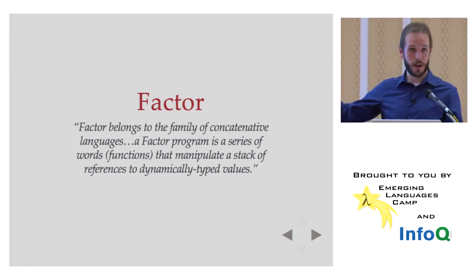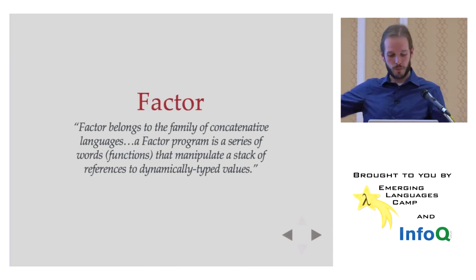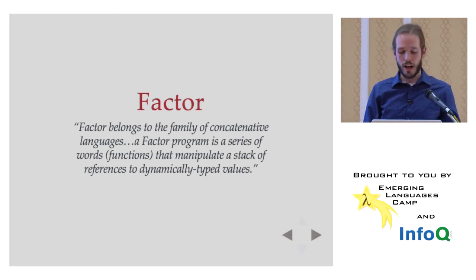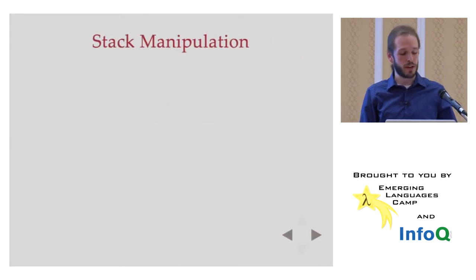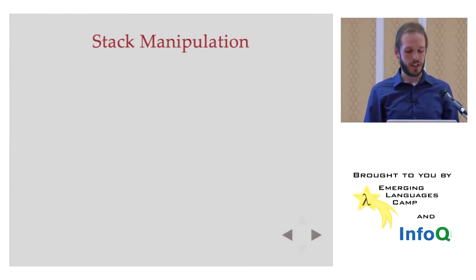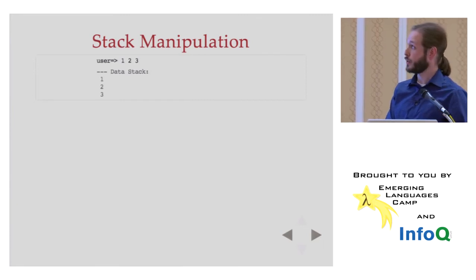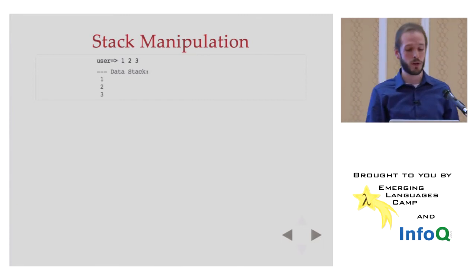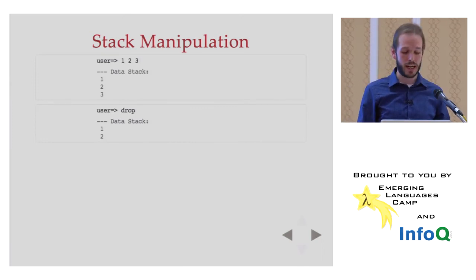When you have a lot of stack manipulation going on, like you have three things top of the stack, and you want to do something to the third one, you've got to move it, duplicate it, does it consume it, that is a signal to you, the programmer, that you're getting in the weeds. And there are other ways to frame it better. So I want to talk about factor at this point to kind of introduce the real niceties of Gershwin's concatenative API because it's from factor. Factor is a concatenative language, and this just summarizes what a stack-based language is. A factor is a series of words, functions that manipulate a stack of references to dynamically typed values. Works for Clojure, we're dynamically typed. All right.